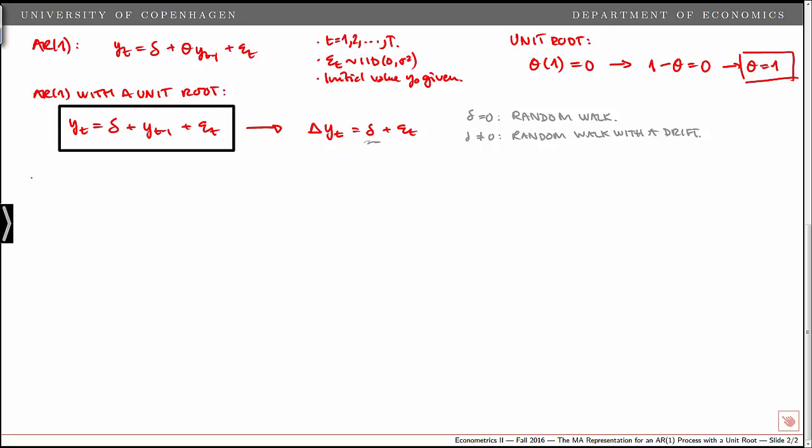To study the properties, we derive the moving average representation. We start with the model Y_t = δ + Y_{t-1} + ε_t, and recursively substitute for Y_{t-1}, Y_{t-2}, and so on. This is quite easy to do in the AR1 model with a unit root.